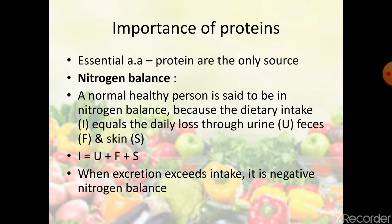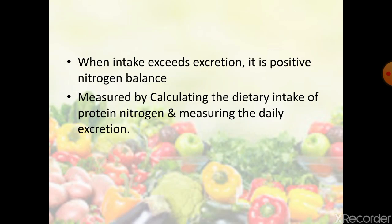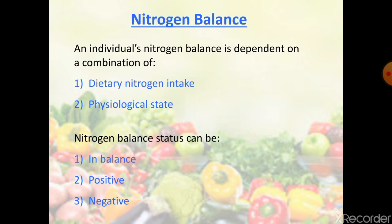Next is nitrogen balance. A normal healthy person is said to be in nitrogen balance when their dietary intake of nitrogen is equal to the daily loss of nitrogen through urine, feces, and skin. When excretion exceeds intake it is called negative nitrogen balance, and when intake exceeds excretion it is positive nitrogen balance. Nitrogen balance is measured by calculating the dietary protein nitrogen intake and measuring the daily excretion.